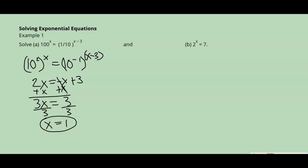You can always plug it in and check. 100 to the first power equals 100. Then put 1 in for x: 1 minus 3 is negative 2. So 1 over 10 to the negative 2 turns into 10 squared by properties of exponents, and 10 squared equals 100. That confirms this is a true statement, so x equals 1 is the solution.